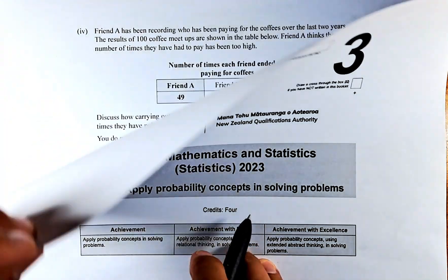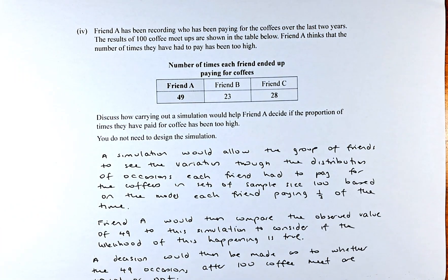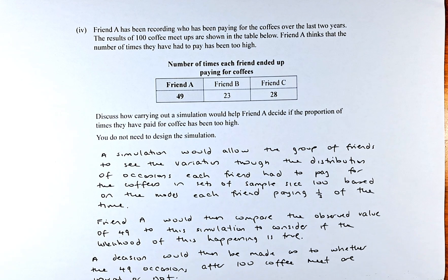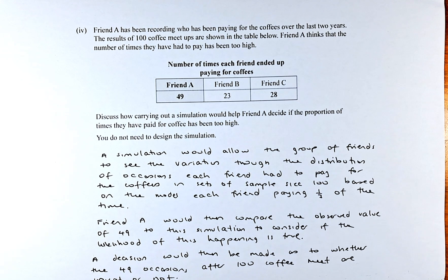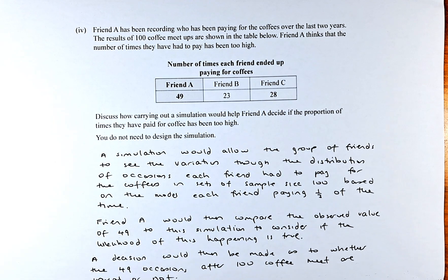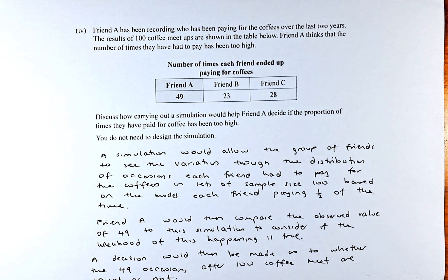So let's do it. Friend A has been recording who has been paying for the coffees over the last 2 years. The results of 100 coffee meetups are shown in the table below. Friend A has 29, friend B has 23, and friend C has 28. Friend A thinks that the number of times they have to pay has been too high.